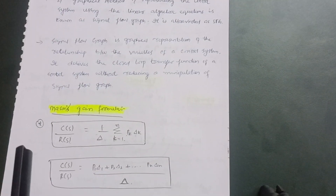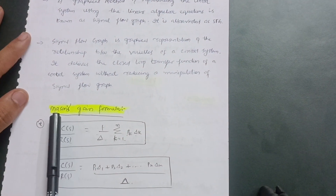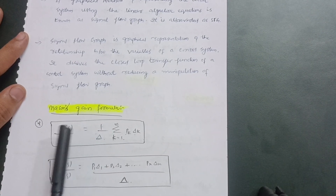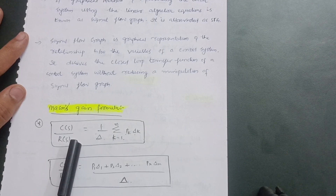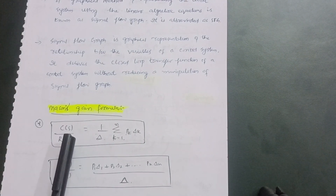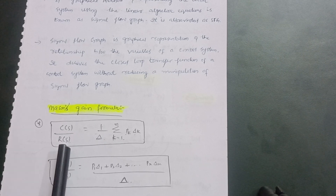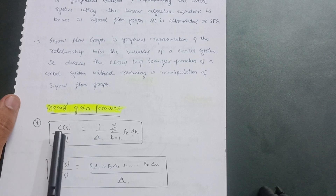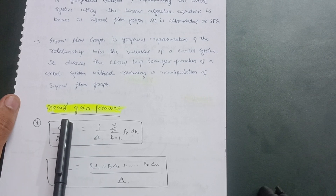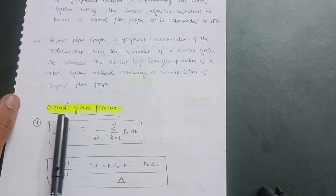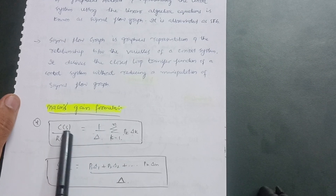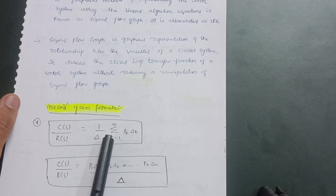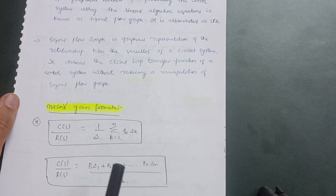In this topic, you have to understand Mason's Gain Formula. Throughout all the problems we will use this particular formula. In block diagram reduction, we used C(s)/R(s) = G(s) / (1 + G(s)H(s)). But in the signal flow graph case, we use Mason's Gain Formula: C(s)/R(s) = (1/Δ) × Σ(k=1 to n) Pk·Δk.